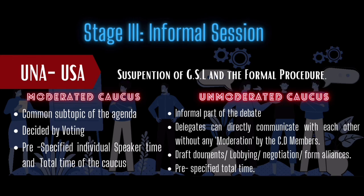Committee dais members can recognize multiple motions for Moderated and Unmoderated Caucuses simultaneously, but voting takes place in order of disruption — meaning the motion that would disrupt the formal session for the longest time is voted upon first. If that motion passes, remaining motions automatically fail. For example, if there is a motion for an Unmoderated Caucus of 10 minutes and a Moderated Caucus of 5 minutes, the Unmoderated Caucus is voted upon first, and only if it fails does the Moderated Caucus go to a vote.